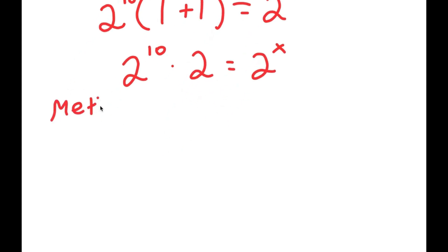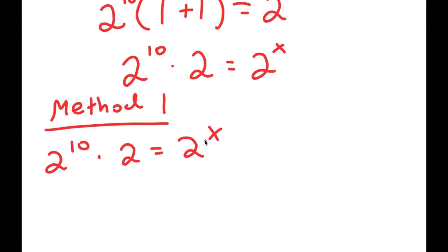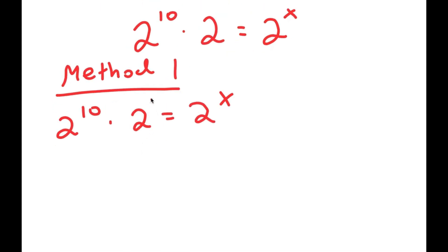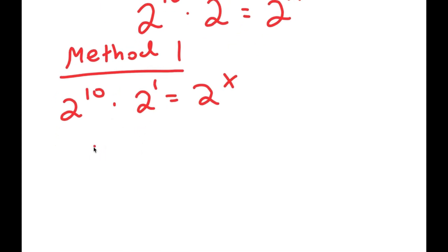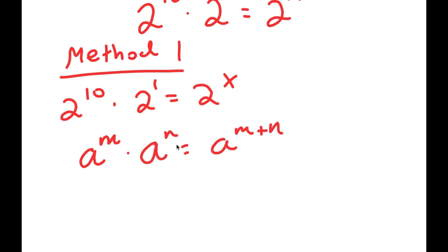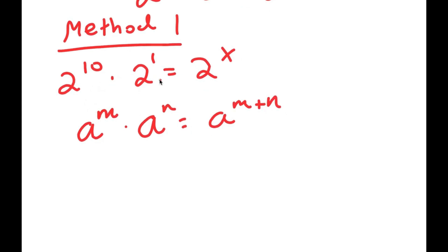For Method 1, I have 2 to the power of 10 times 2 is equal to 2 to the power of x. I'm going to rewrite 2 as 2 to the power of 1. Now, using the rule that a to the power of m times a to the power of n equals a to the power of m plus n, I get 2 to the power of 10 times 2 to the power of 1 equals 2 to the power of 10 plus 1, which is equal to 2 to the power of 11.